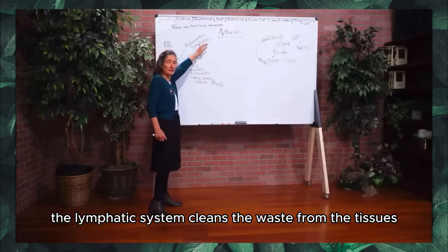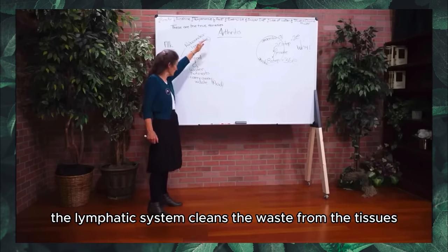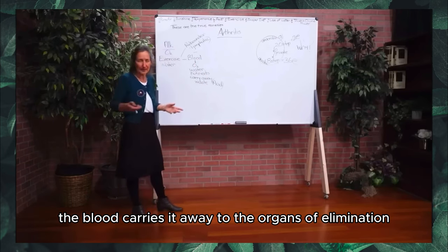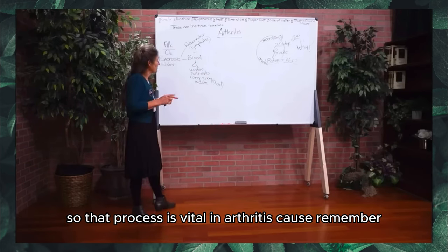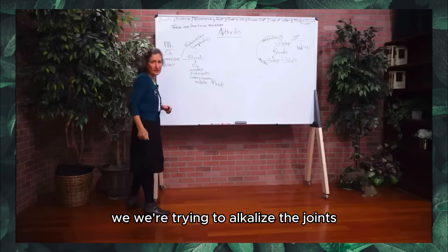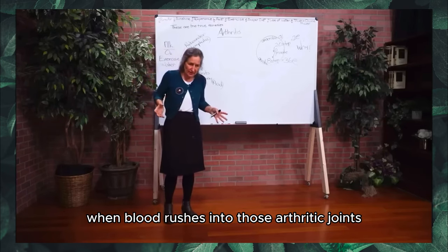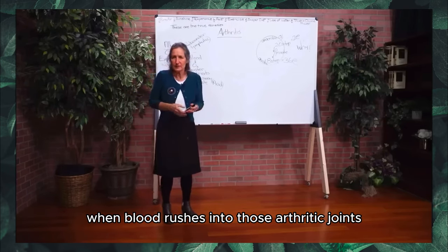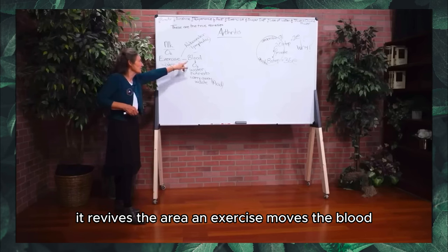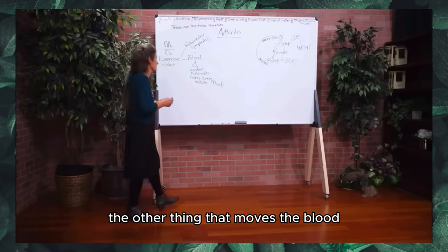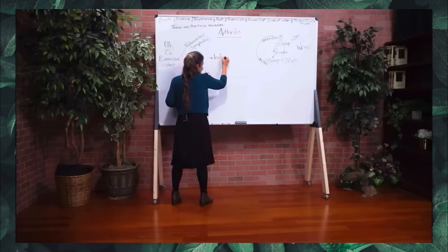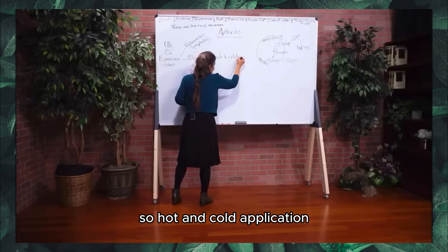The lymphatic system cleans waste from the tissues, dumps it into the blood, and then the blood carries it away to the organs of elimination. That process is vital in arthritis, because we're trying to alkalize the joints and alkalize the body. When blood rushes into those arthritic joints, it brings life to the area and revives it. Exercise moves the blood. The other thing that moves the blood — as we discussed in our pain presentation — is hot and cold applications.